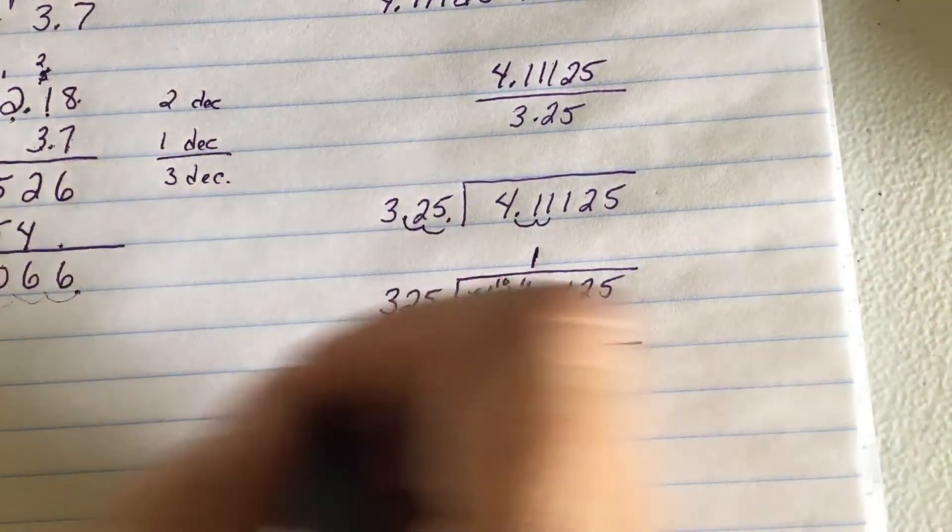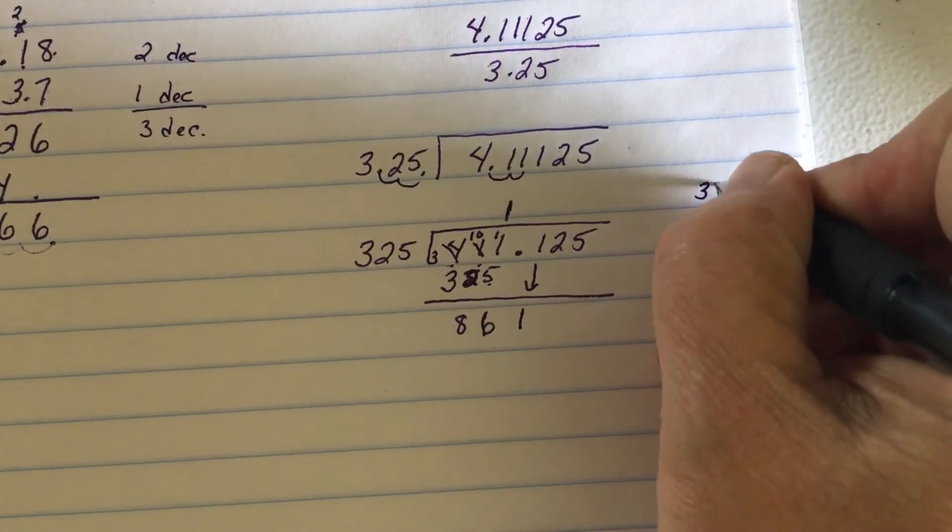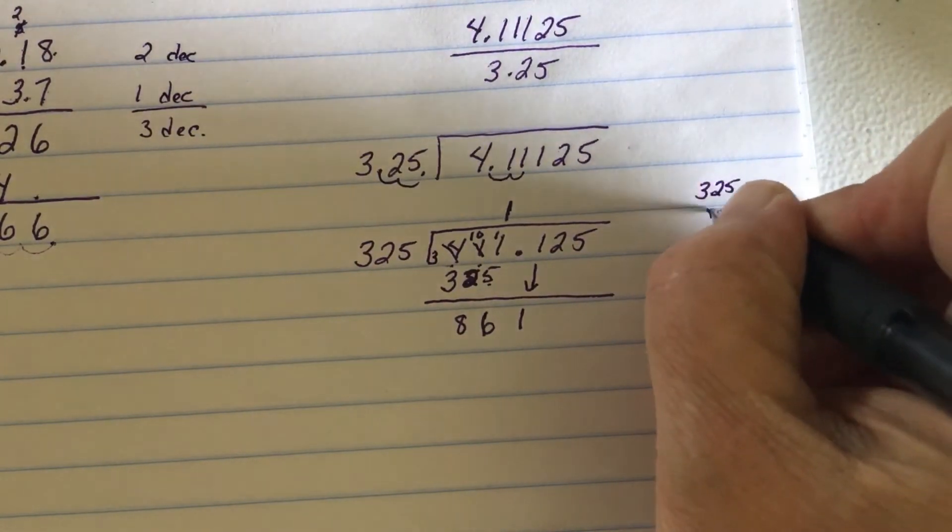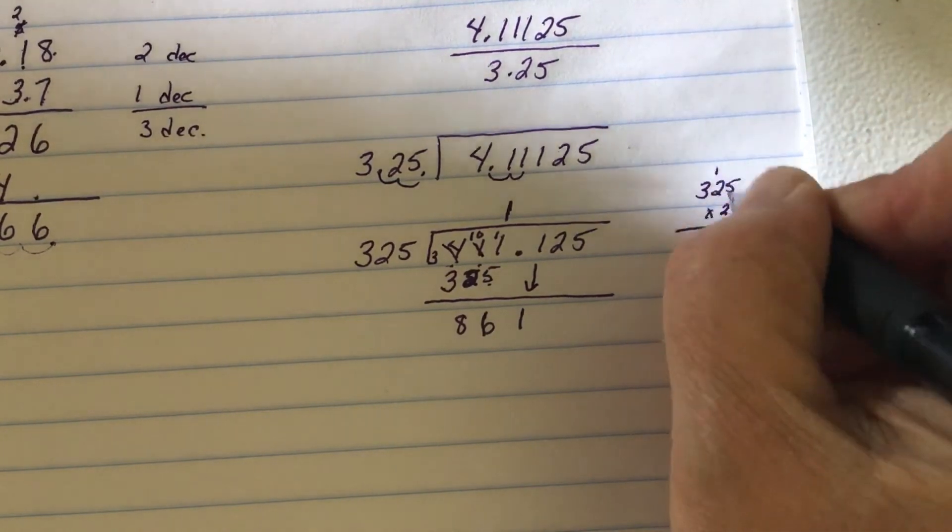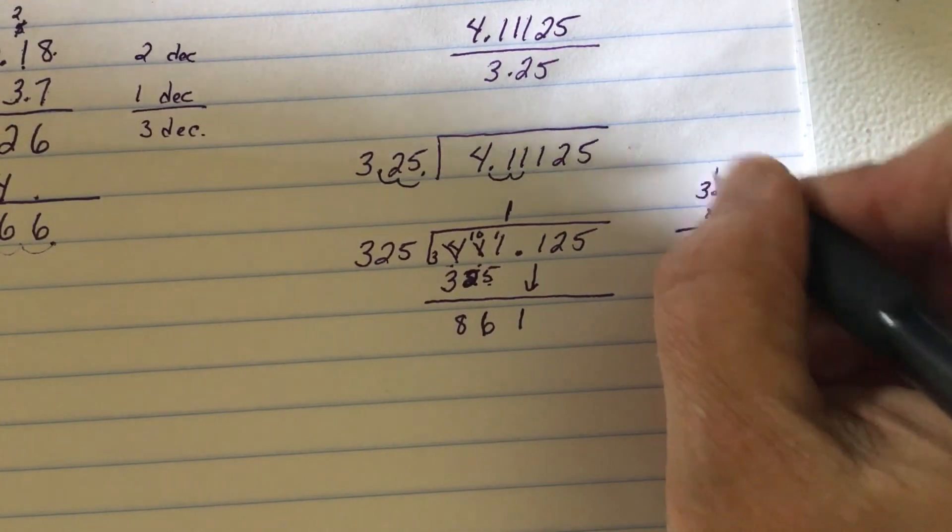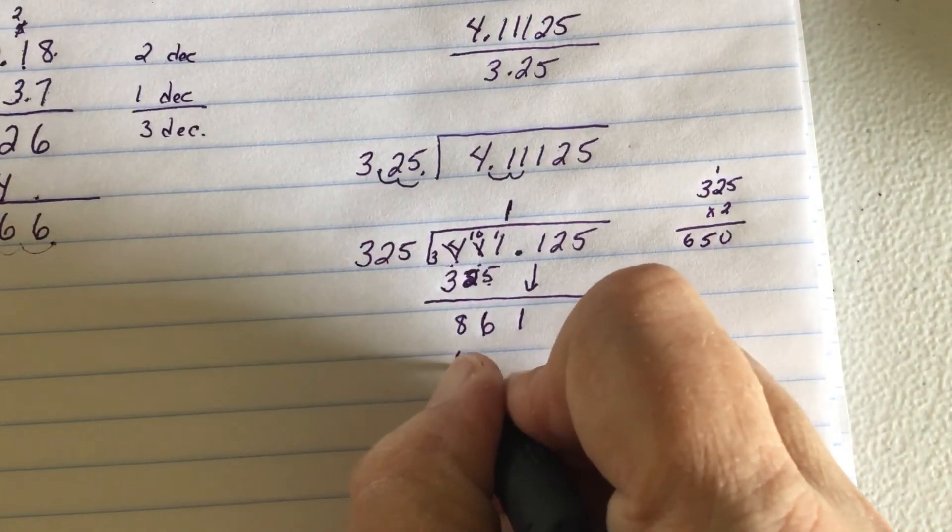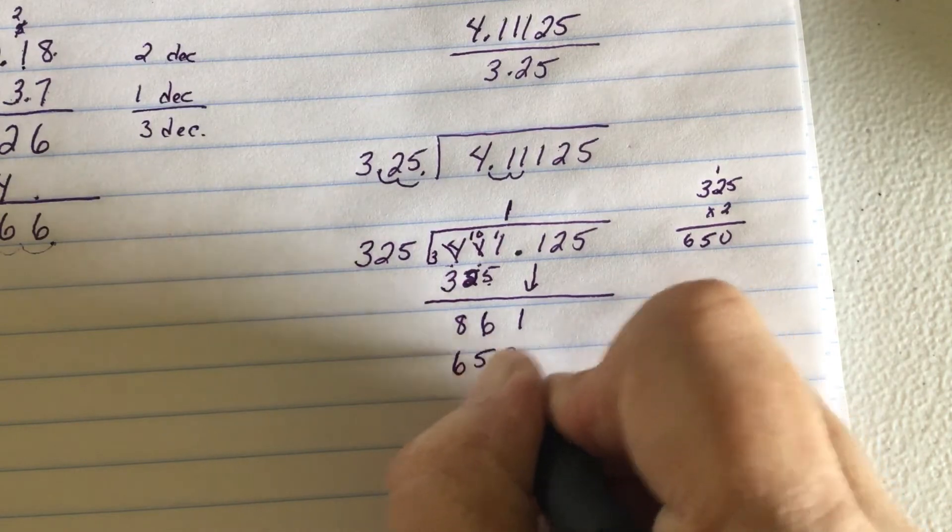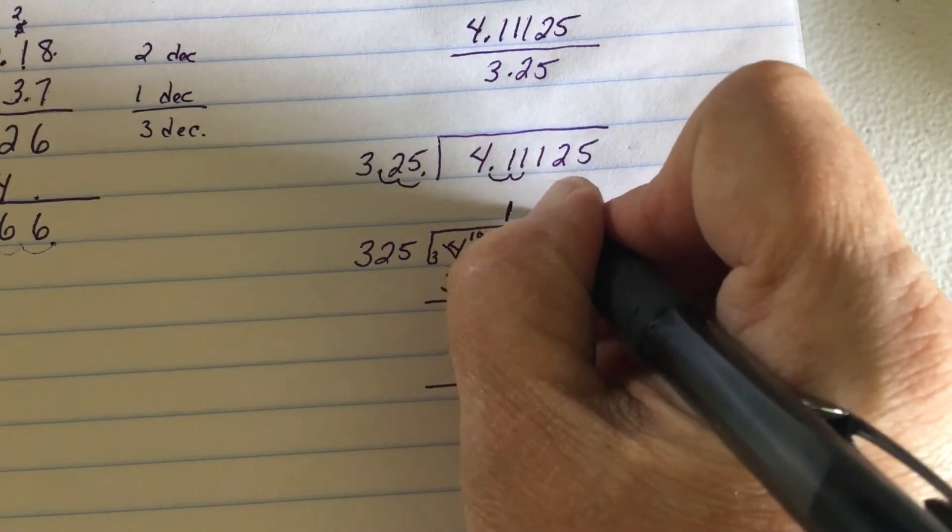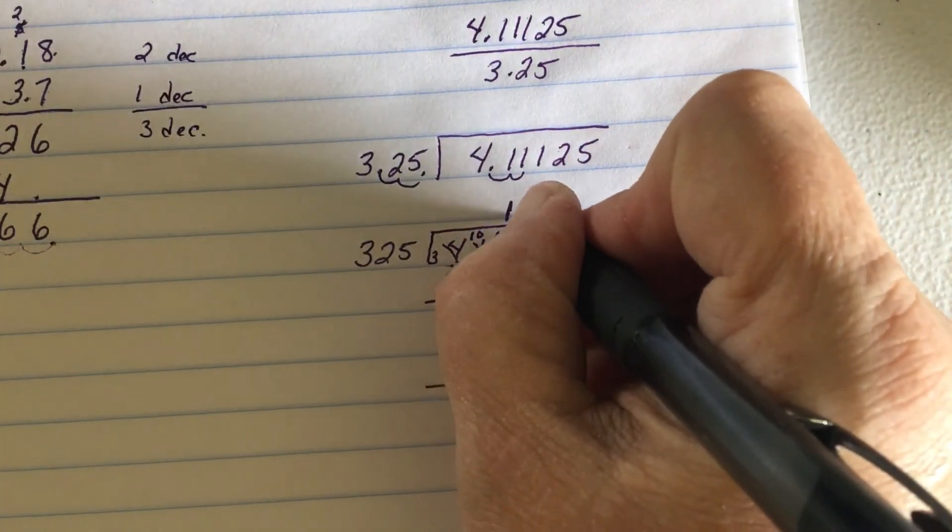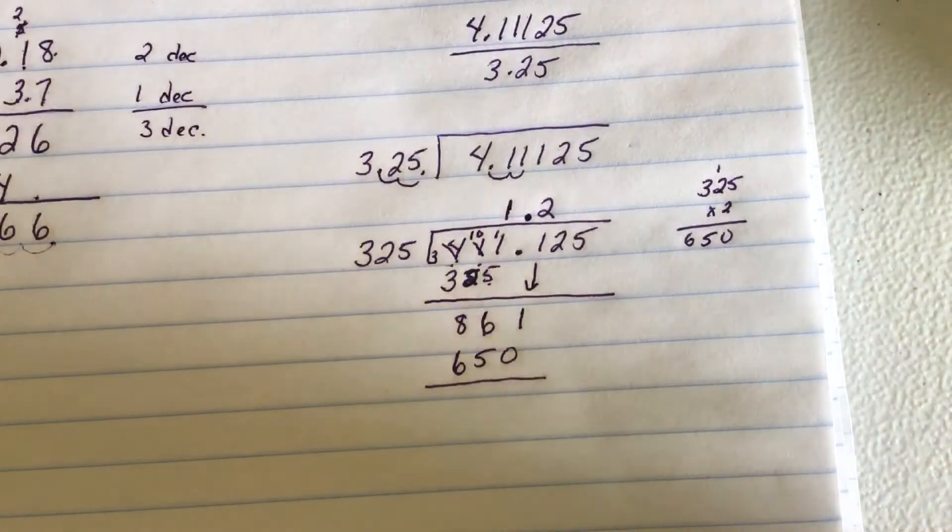And 325 goes in how many times? Well, this is where I said sometimes you have to do a little side work. So I'm betting it's twice. 2 times 5 is 10, carry the 1. 2 times 2 is 4, plus 1 is 5. 650. And that's by 2. Now, I left a gap there. Remember, really, you've got to keep those decimals lined up.